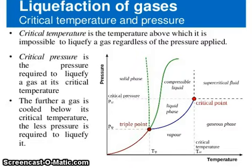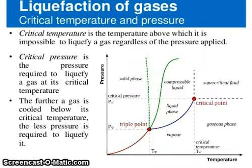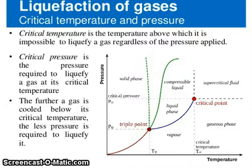On the phase diagram you can see the triple point, critical pressure area, compressible liquid, liquid phase, vapor, supercritical fluid, critical point, and critical temperature. There are two notable points: the triple point and the critical point, which also indicates the critical pressure.